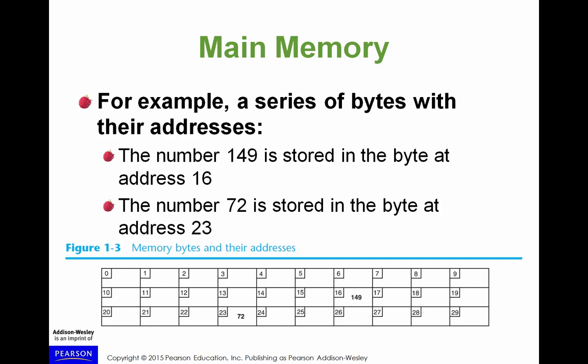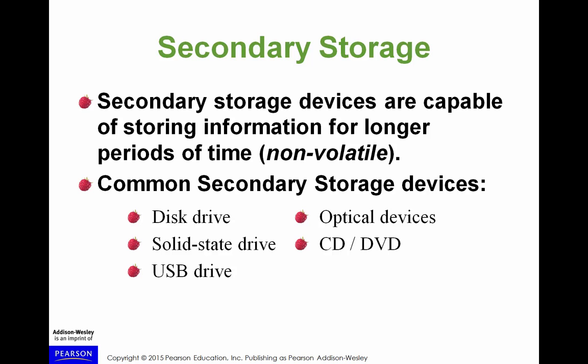Main memory only works while the computer is on, so we have secondary storage mechanisms that allow data to persist when the computer is off. We've got disk drives to store data on. Solid-state drives are also much faster than disk drives but slower than main memory — things like flash drives and USB drives. We also have optical devices: CD and DVD drives are slow but serve as other forms of long-term storage.